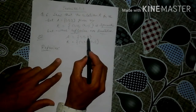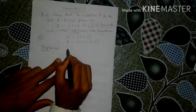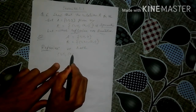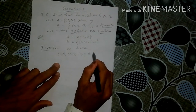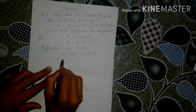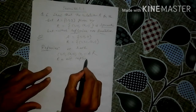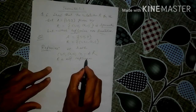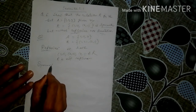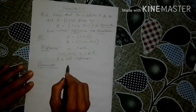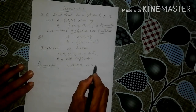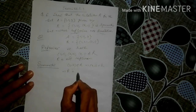For reflexivity, we need (1,1), (2,2), (3,3) to belong to R. But (1,1), (2,2), (3,3) do not belong to R. So R is not reflexive. For symmetry: (1,2) belongs to R implies (2,1) belongs to R, so R is symmetric.